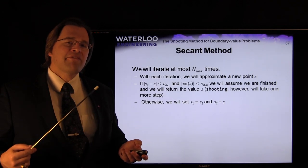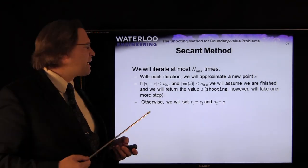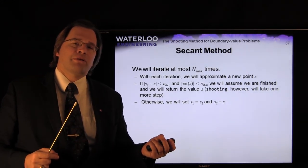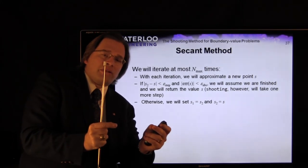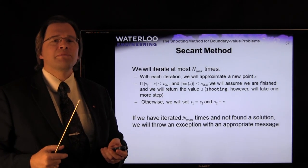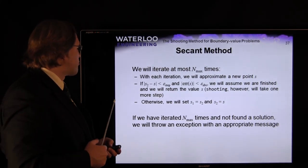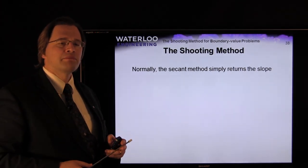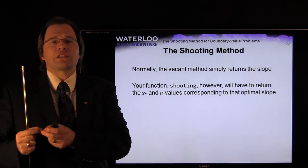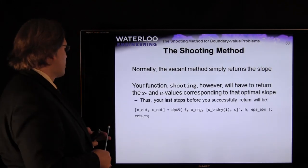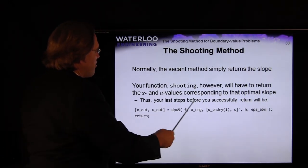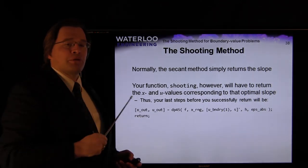If neither halting condition is met, we set s1 = s2 and s2 = s and continue iterating. Once the slope s is found, the secant method itself returns just the slope. However, the shooting function must return the actual solution — so we call DP45 once more with the found slope s, and that final call's output is the output of the shooting method.